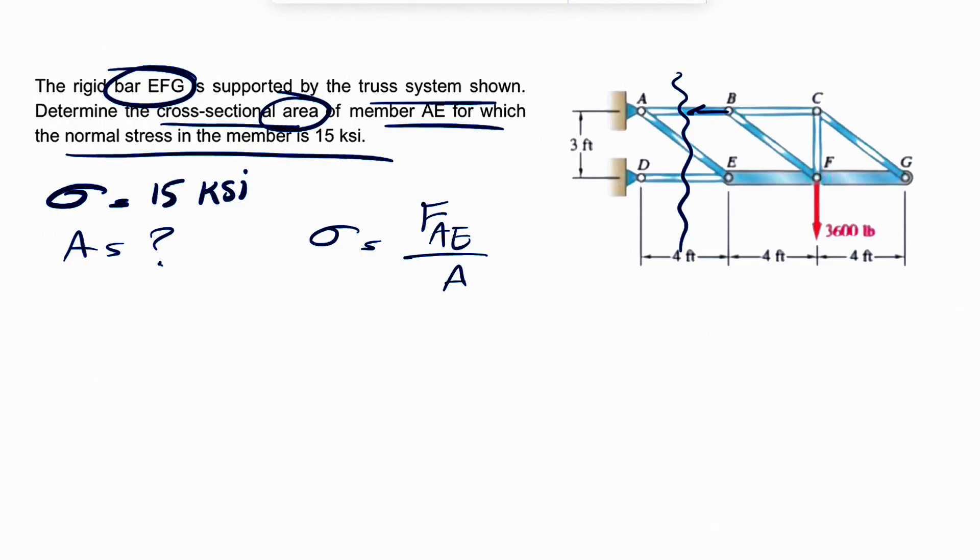And if we do that, we're going to have one force in here. So basically, we have the free body diagram of this part of the truss. So we're going to have FAE in here, which is what we're looking for, FED, and FAB.